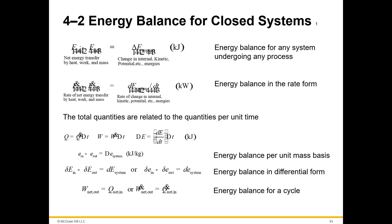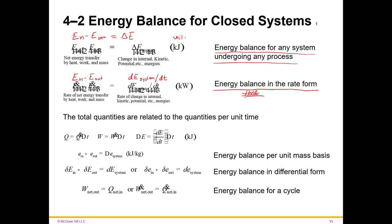All this says is energy in less energy out equals the change in energy. E in less E out equals the rate of change in internal, kinetic, and potential energies — just whatever you're looking at with the system over the change in time. This is energy balance in rate form — when you're talking about the rate of something, you're talking about time. This is the energy balance for any system undergoing a process, and these are the units.